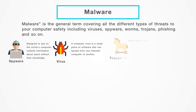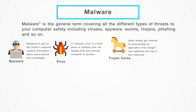Trojan horse: Users can infect their computers with Trojan horse software simply by downloading an application they thought was legitimate but was in fact malicious. Once inside your computer, a Trojan horse can do anything from recording your passwords by logging keystrokes — known as a keystroke logger — to hijacking your webcam to watch and record your every move.